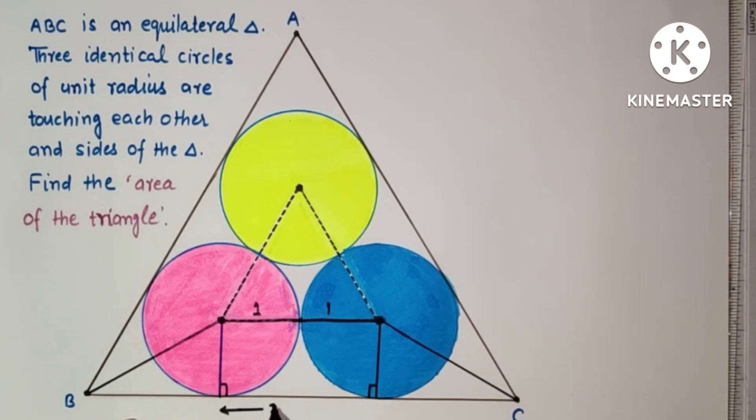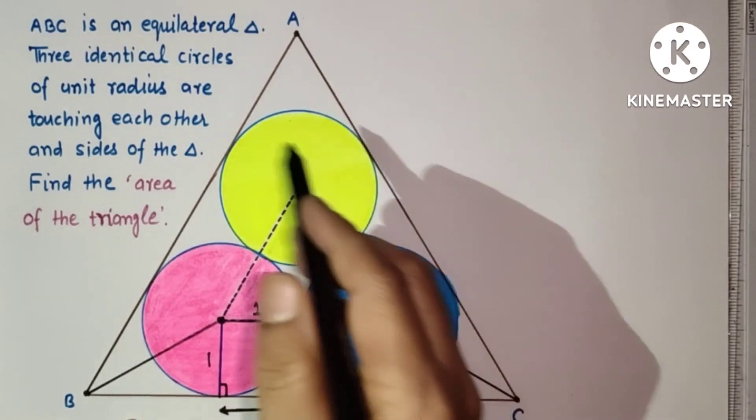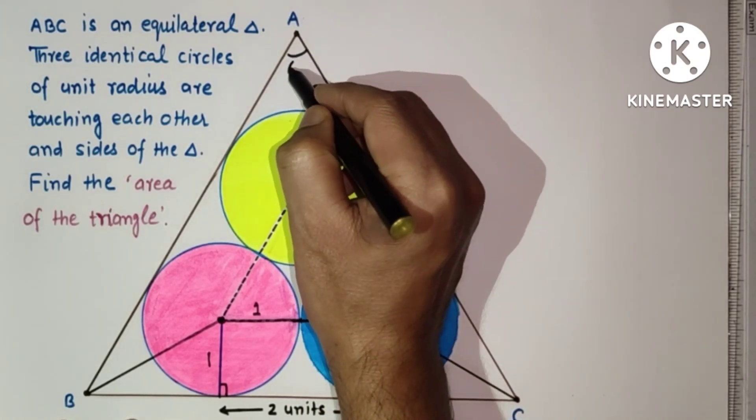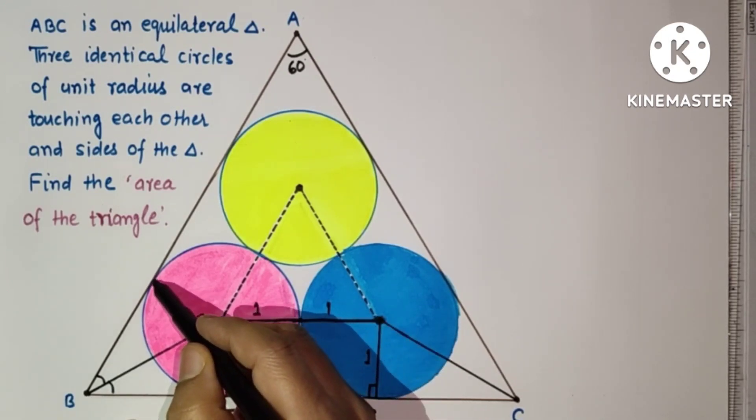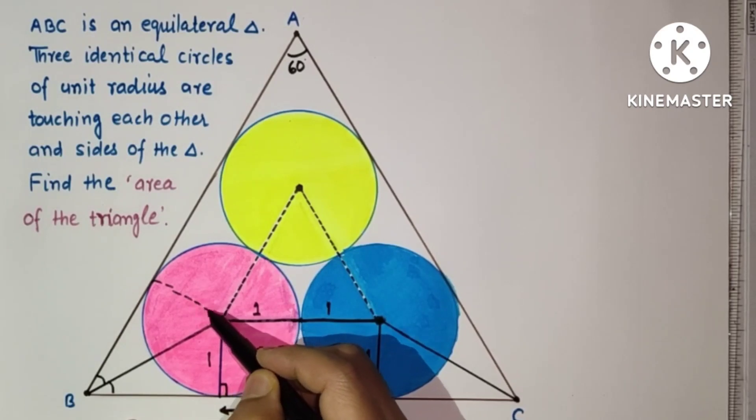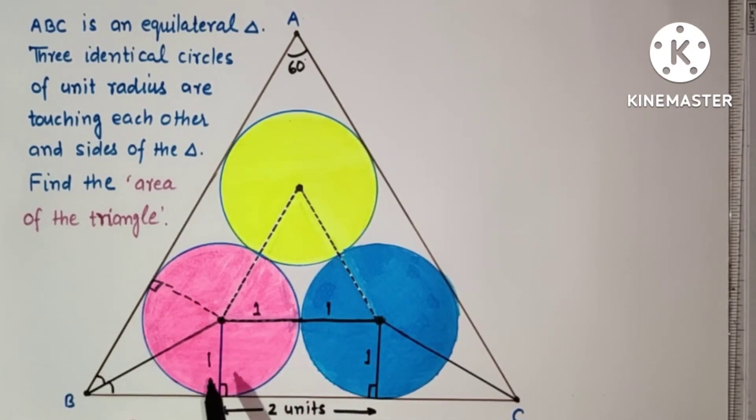Now since triangle is an equilateral triangle, therefore this is 60 degrees. This will also be 60. So if we join this also, these two triangles will be congruent. This is one and these two tangents will be equal, so these two triangles are congruent. So this is 30 and this is 30.